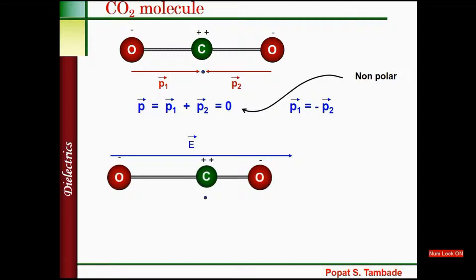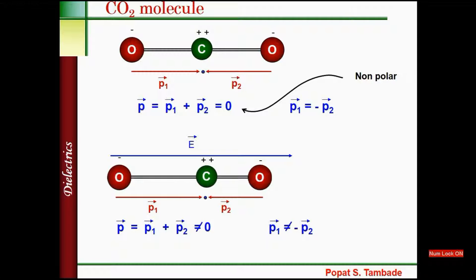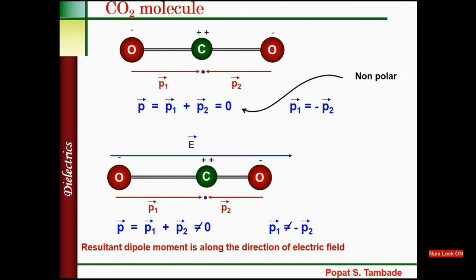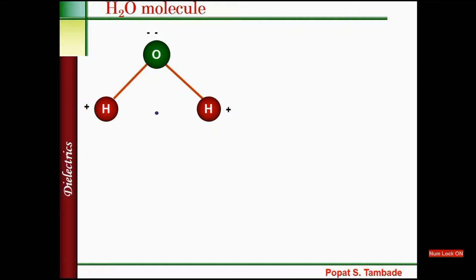If we place the CO2 molecule in an external field, the positive charge moves along the direction of the electric field and the negative charge moves opposite. Due to that, P1 increases and P2 decreases. So P equals P1 plus P2 vectorially, and that is not equal to zero, because P1 is not equal to minus P2. The resultant dipole moment is along the direction of the electric field.